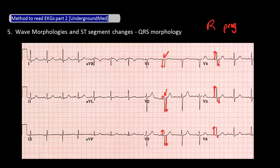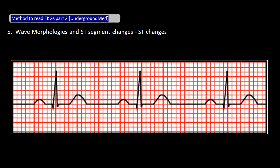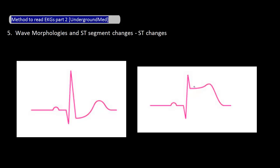When someone has poor R wave progression, it's possible they have had an anterior MI in the past. The last things to look at on an EKG are some of the most important things, and they are ST segment changes and T wave morphology. ST segment depressions and T wave inversions are suggestive of myocardial ischemia. ST segment elevations are concerning for myocardial injury, and while there is a differential for ST elevation, the most concerning cause is a STEMI. In this example, the ST segment is at exactly the same level as the PR segment, so there is no ST depression or elevation. An ST depression would look like this, and an ST elevation would look like this. We see an ST depression here and an ST elevation here.